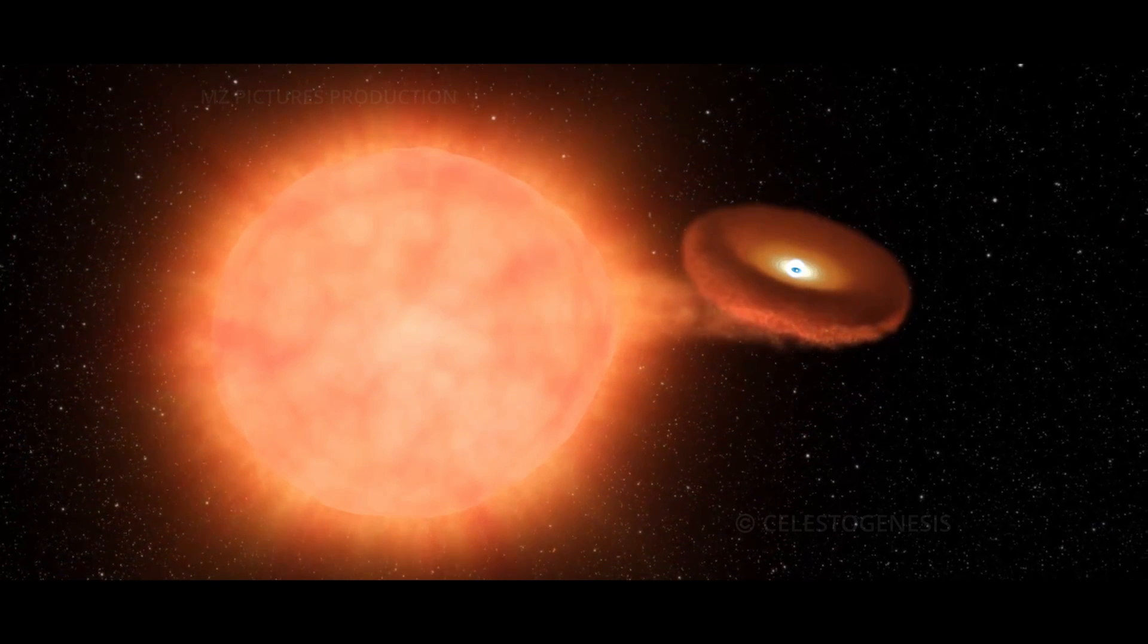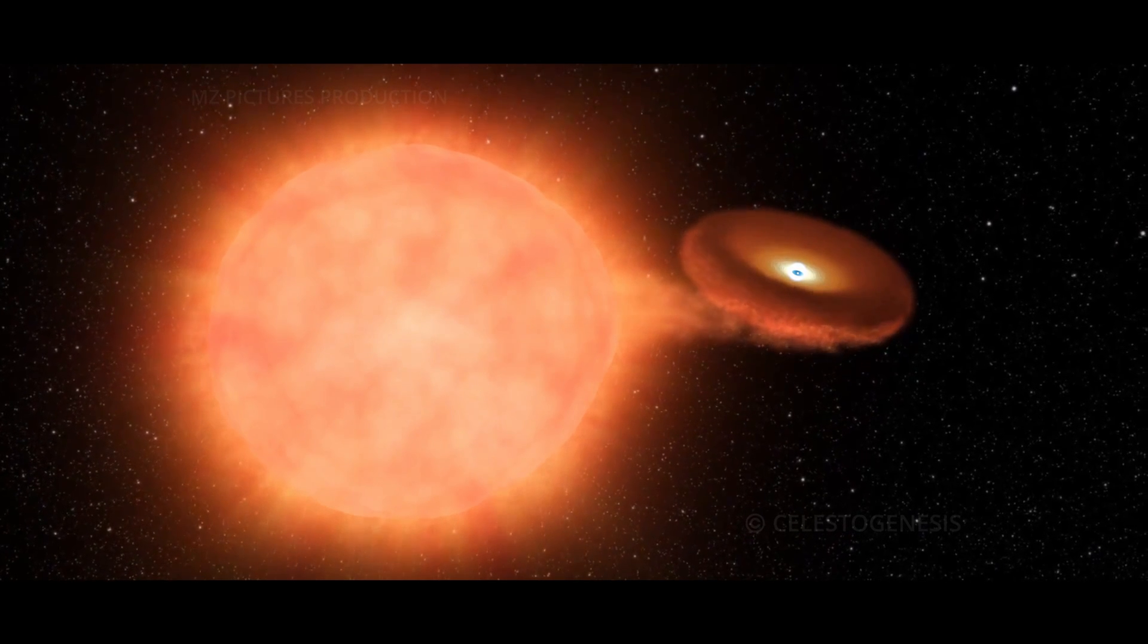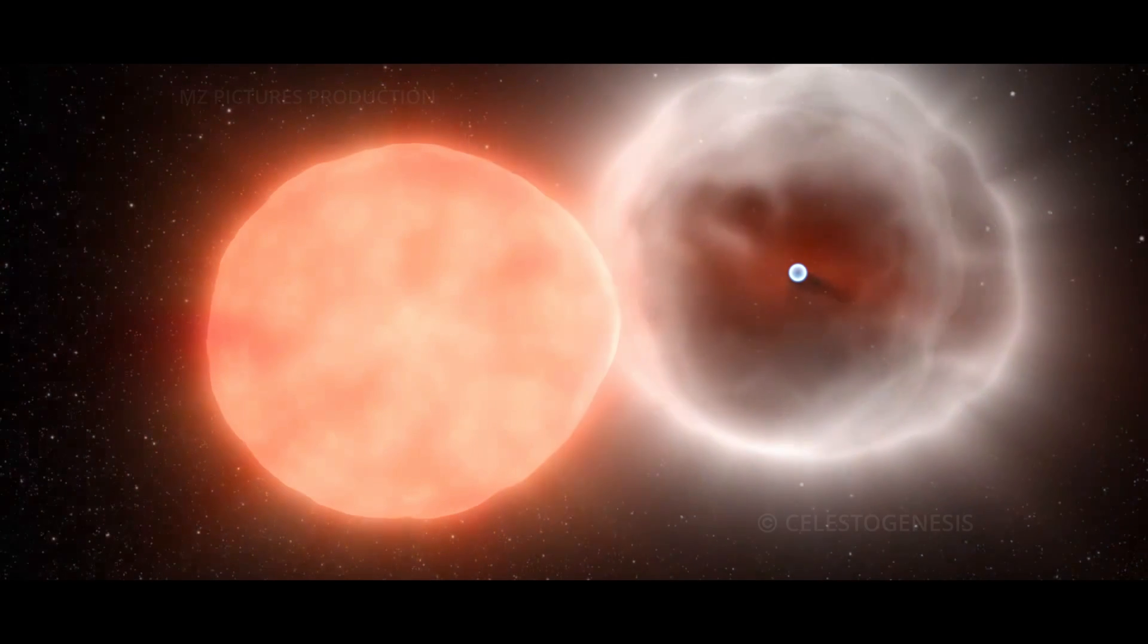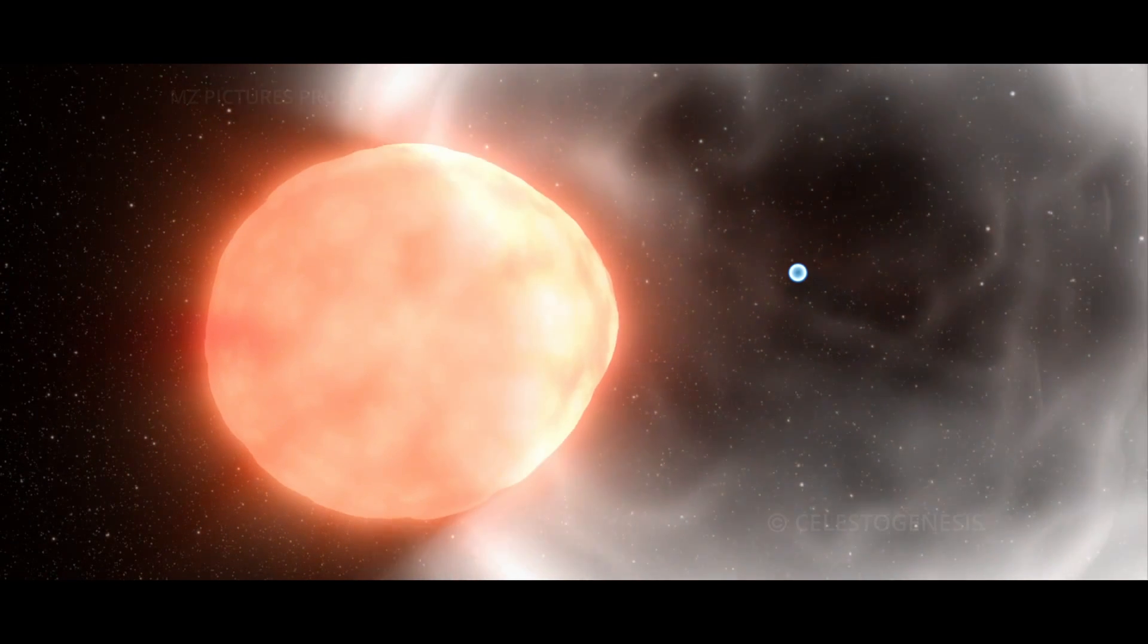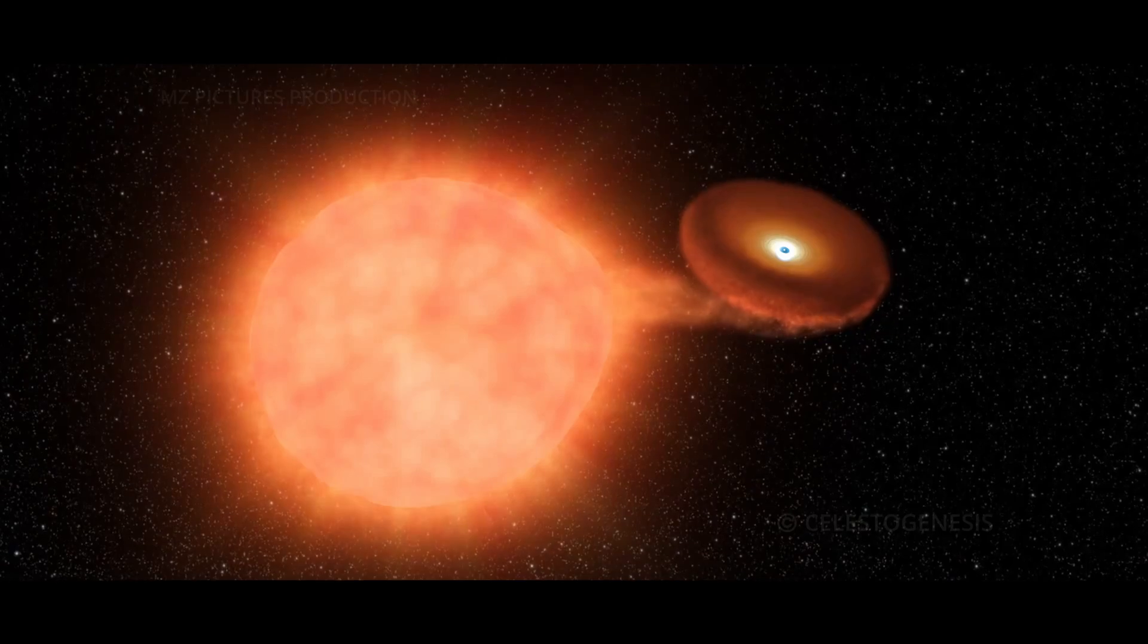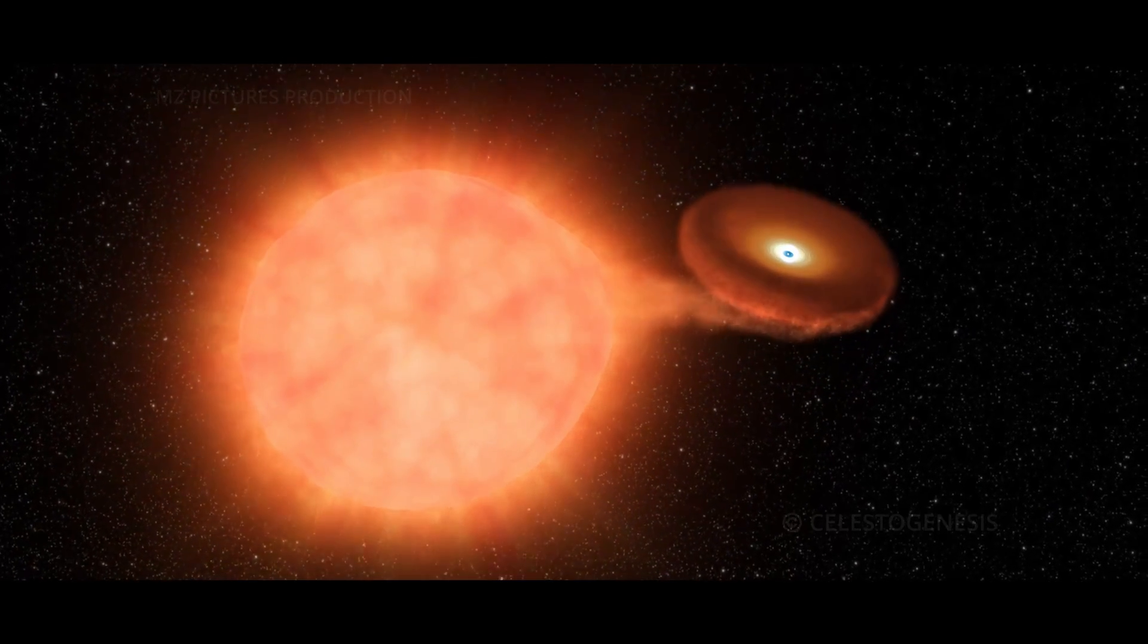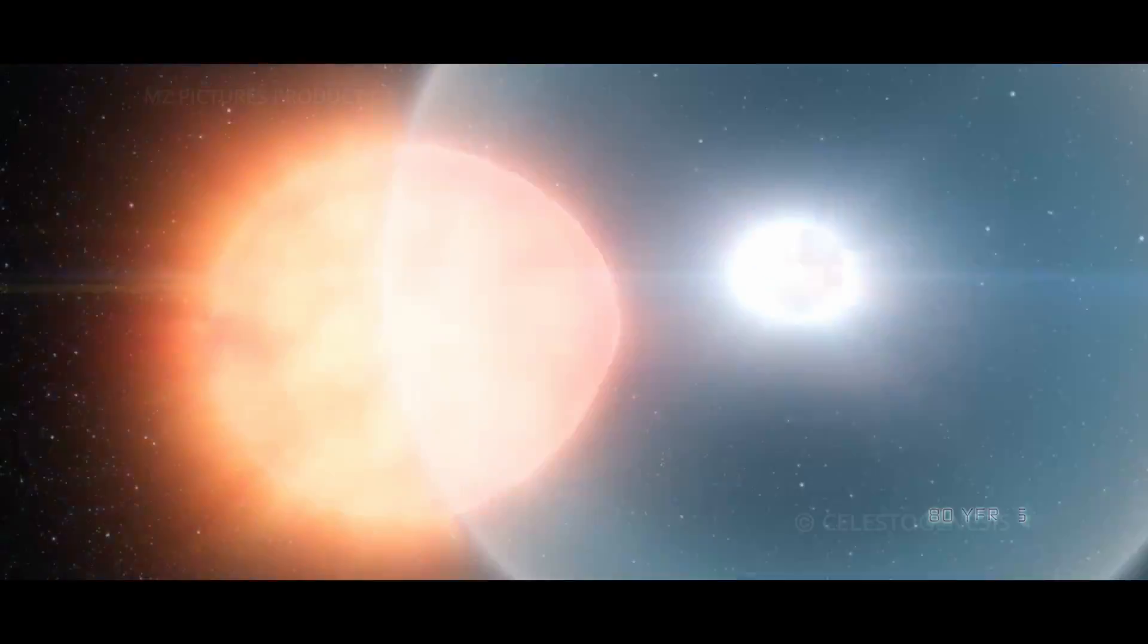This isn't a calm or quiet process, quite the contrary. It culminates in a spectacular explosion, a nova explosion to be precise. In this explosion, the hydrogen atmosphere is blown away, leaving the white dwarf relatively unharmed. The cycle then repeats, with the white dwarf continuing to pull material from the red giant, leading to regular eruptions approximately every 80 years.